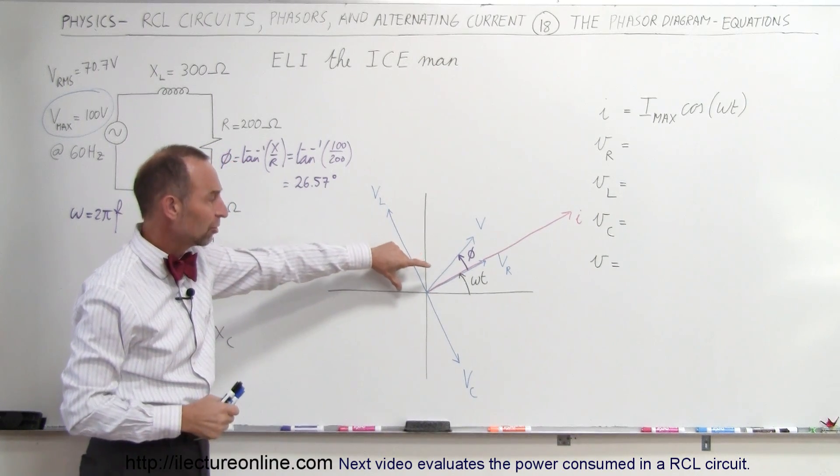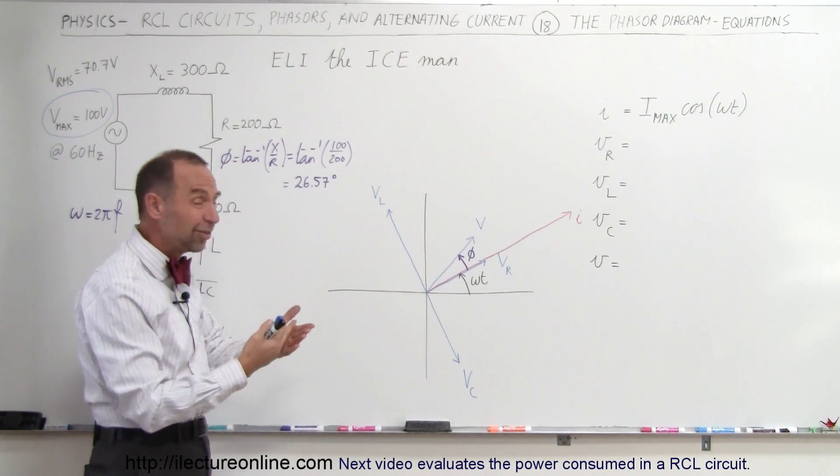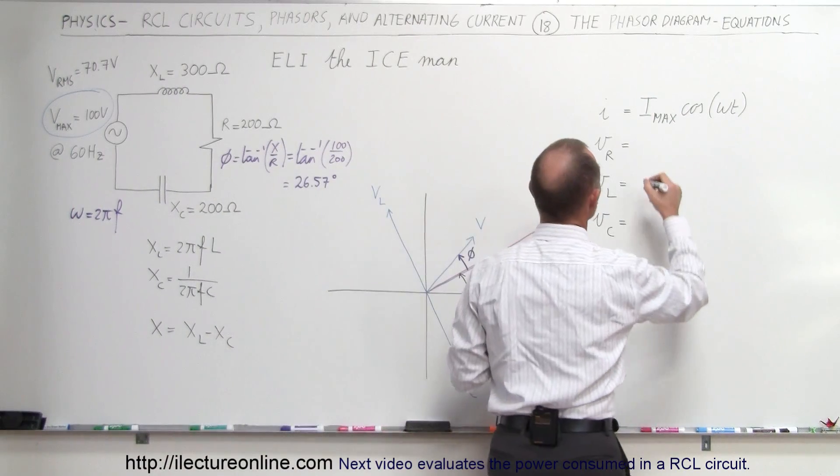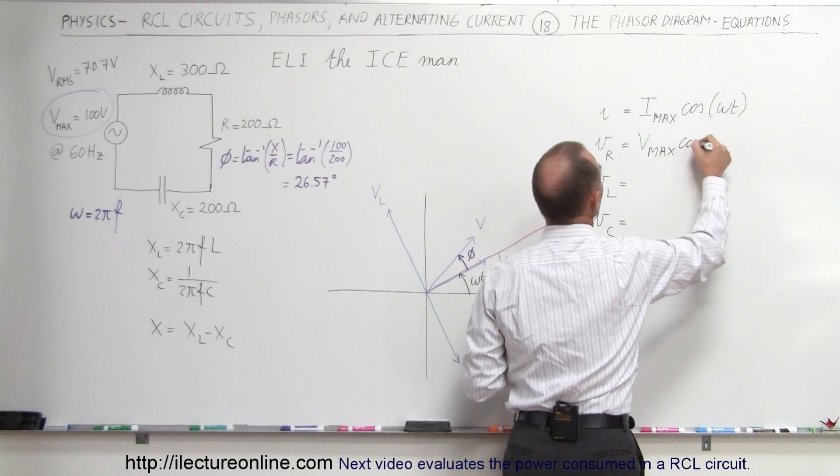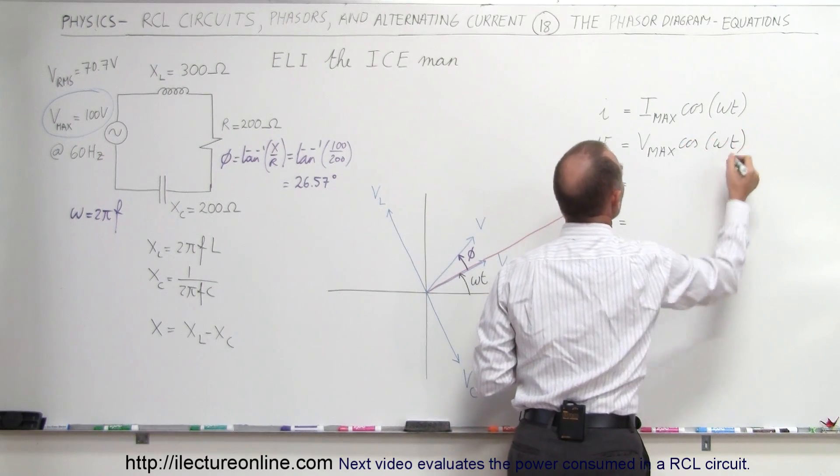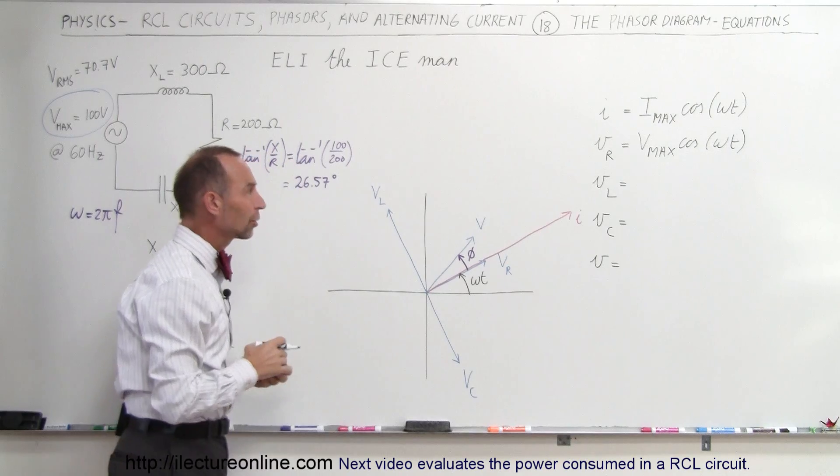How about the voltage across the resistor? Well, they're in phase, so we expect a similar equation. In this case, that would be equal to V max times the cosine of omega T. Same equation except for voltage instead of current.